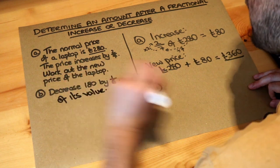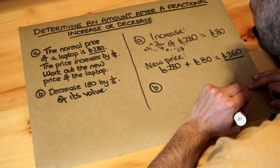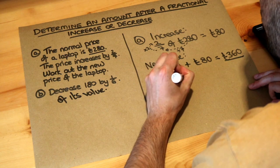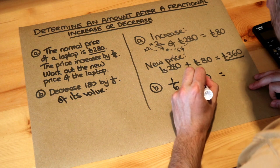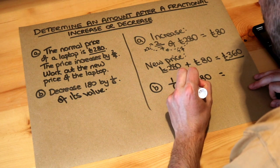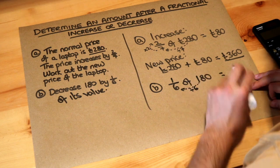Well let's work out what that decrease is first. We work out the increase or the decrease and then we're going to add or subtract it. So a sixth of 180, well to work that out we just divide the 180 by the six and times it by one has no effect. 180 divided by six is 30.